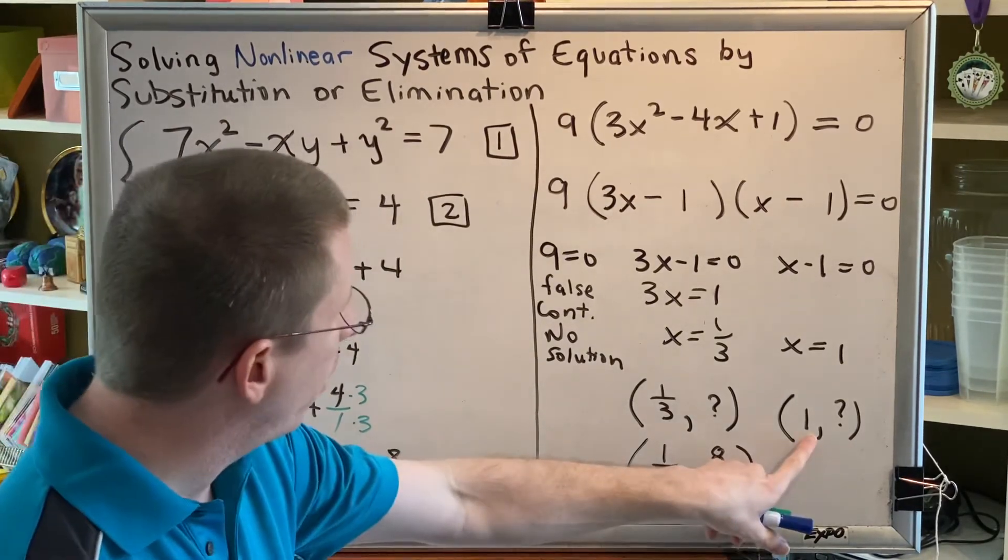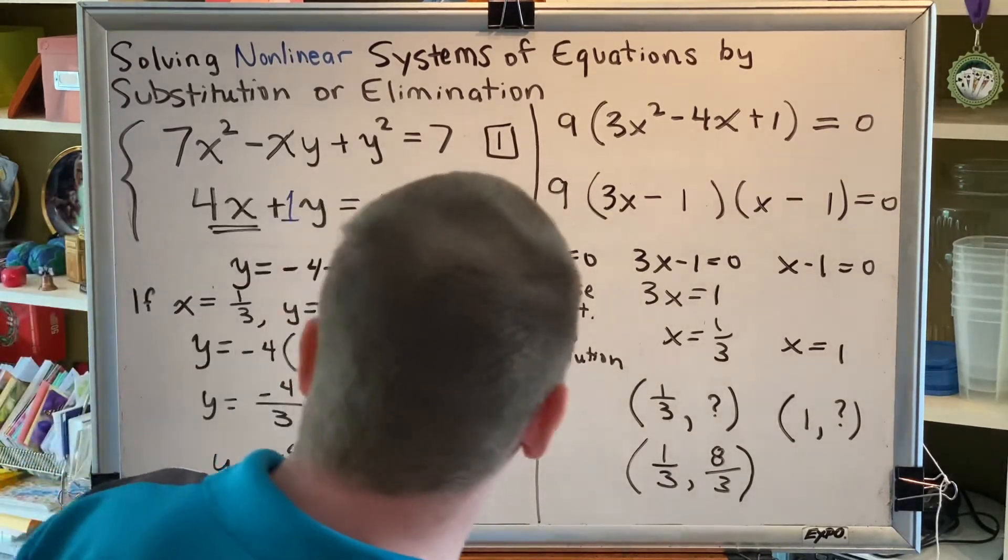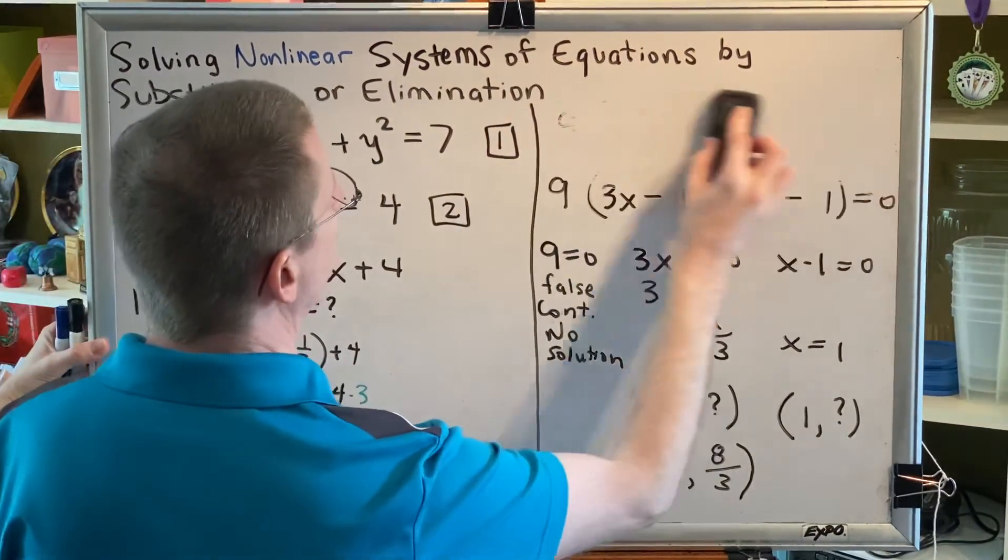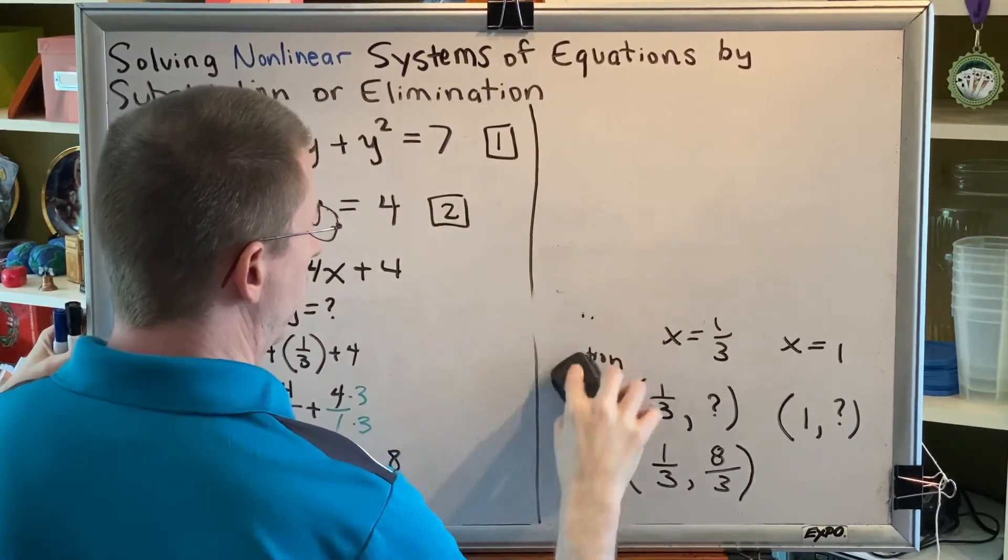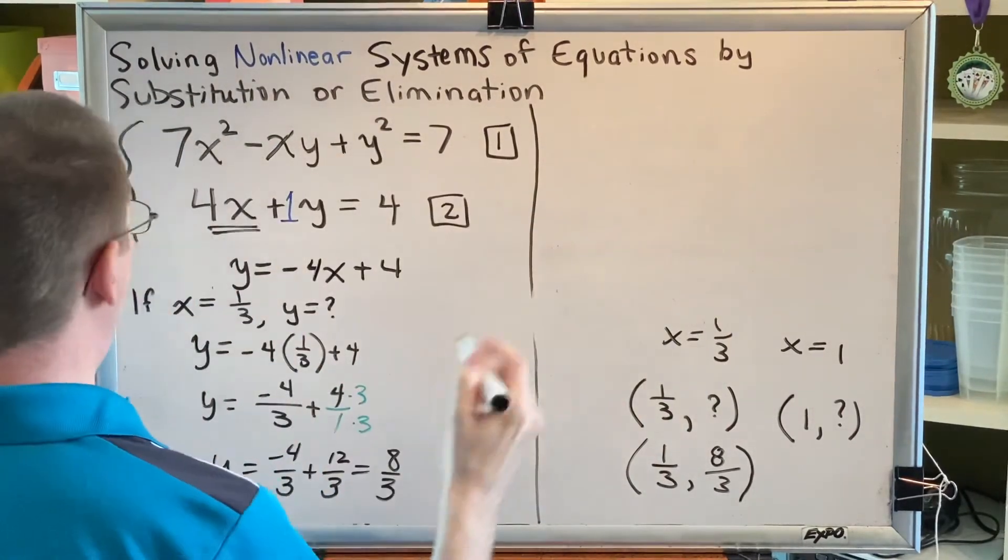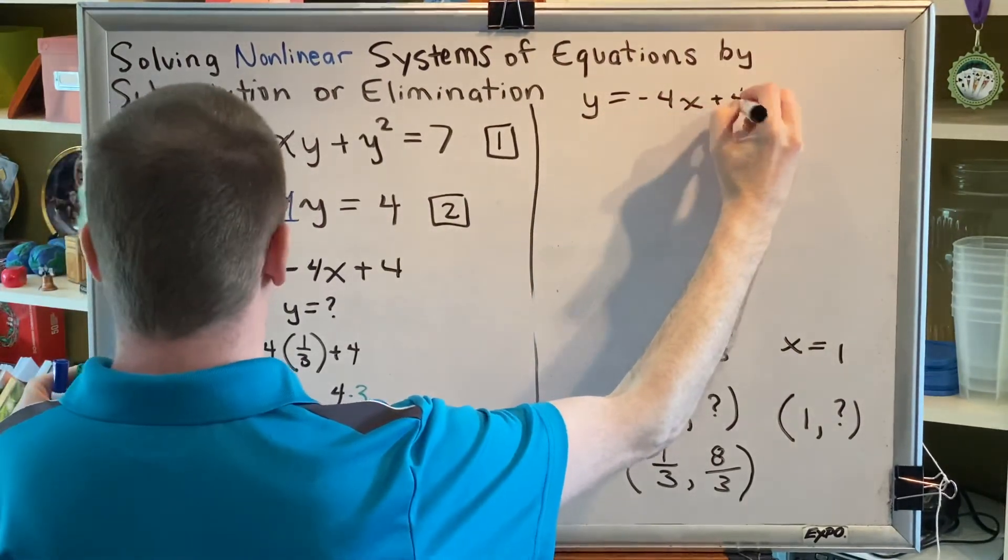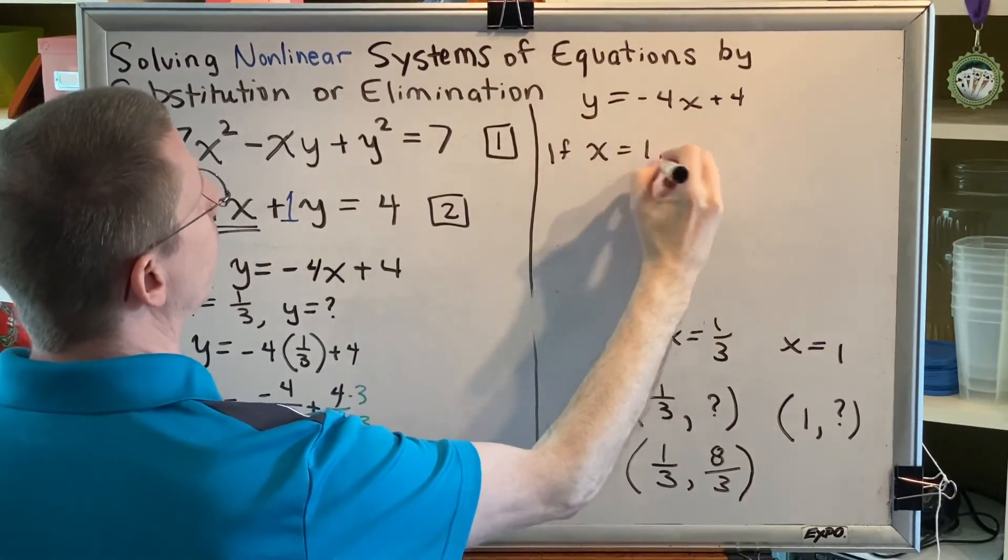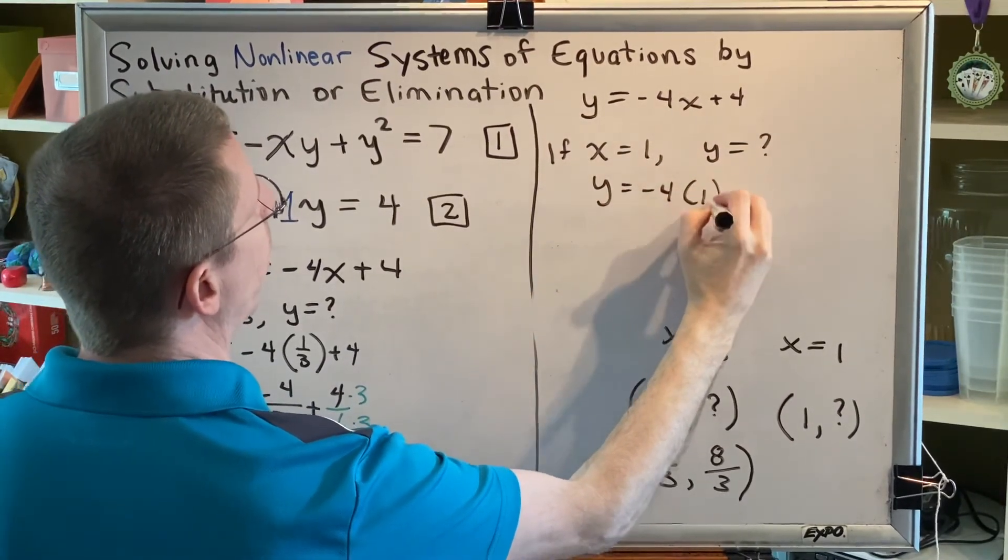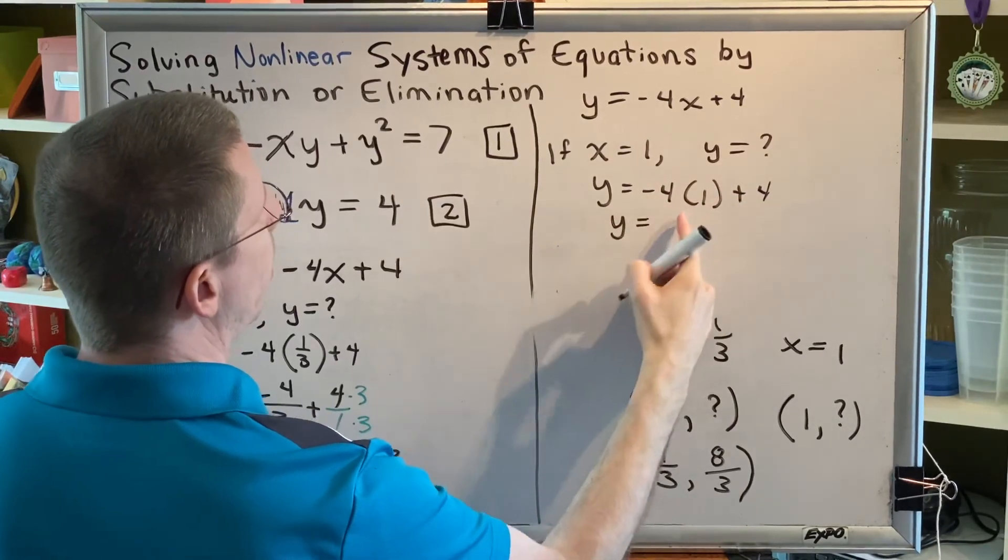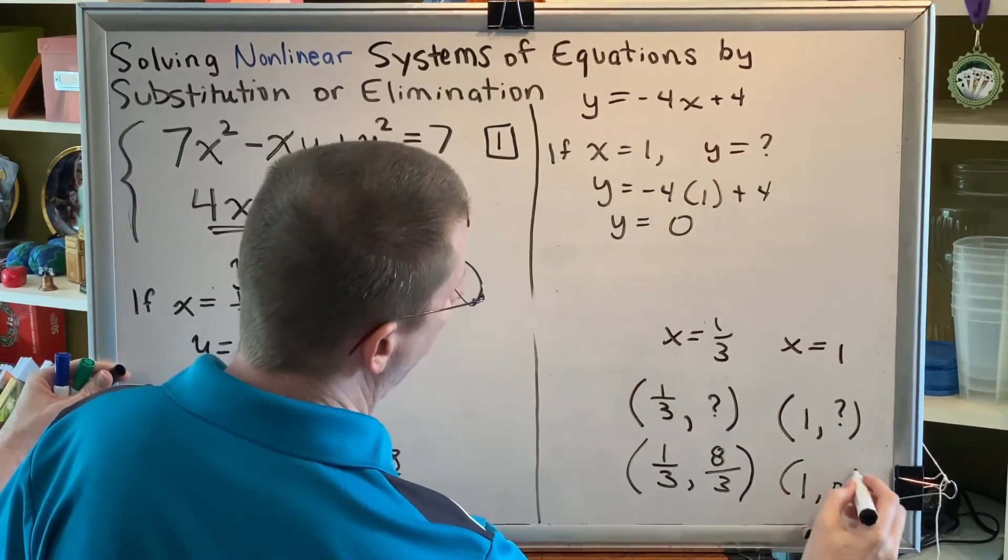Now all I have to do is check the other value, which is what if x equals 1? So let's go ahead and do that now. We know that y equals negative 4x plus 4. So if x equals 1, what does y equal? Well, we get negative 4 times 1 plus 4, which is negative 4 plus 4, which is 0. So we'll get the ordered pair 1 comma 0.